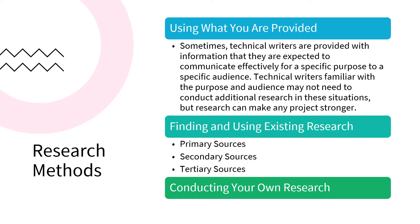A lot of academic articles would be primary or secondary sources. If they're presenting a study they did, they're primary. If they're talking about a number of different studies to investigate some theoretical or pedagogical perspective, they're secondary. And tertiary sources move even farther from analysis and original study towards an overview — the kind of information you might find in a general encyclopedia or textbook.